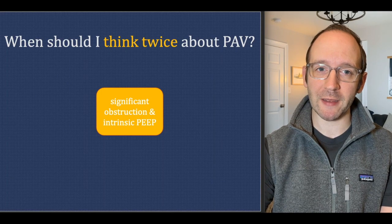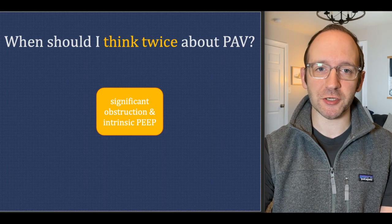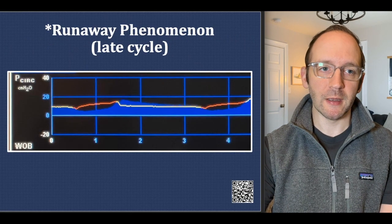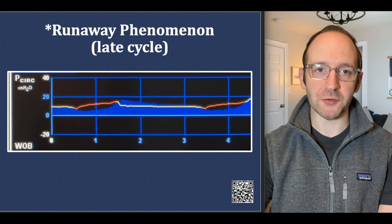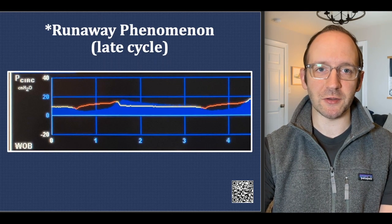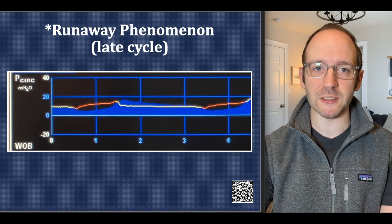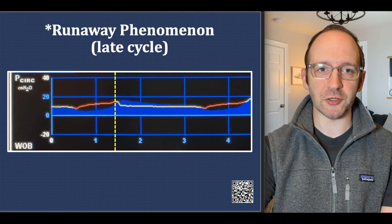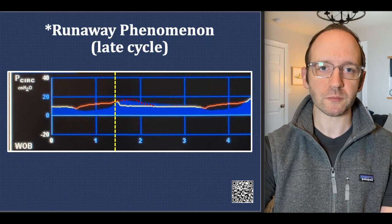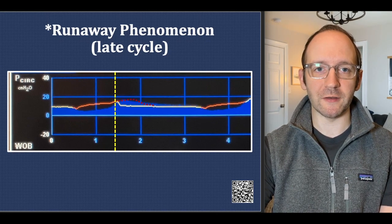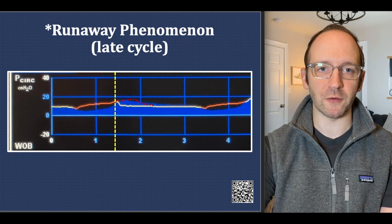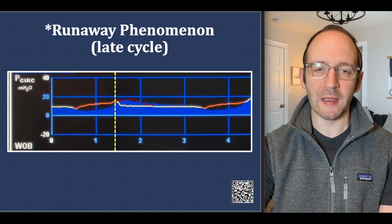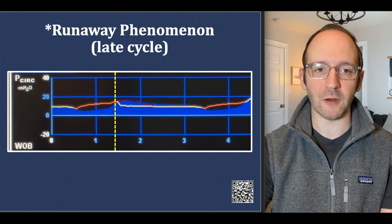When should you think twice about PAV? If there is significant obstruction and intrinsic PEEP, it can make it difficult for the ventilator to both trigger and cycle. Furthermore, with obstructive lung pathology or high resistance, you can get what's called the runaway phenomenon — a dyssynchrony specific to PAV that does not occur in other modes. The breath will continue for perhaps as long as the initial inspiratory effort. This is something you can only really see by monitoring the vent waveforms. It's not something I've seen commonly, but it has been described in the literature.